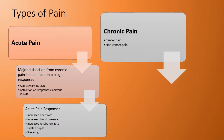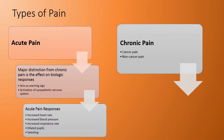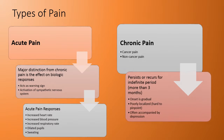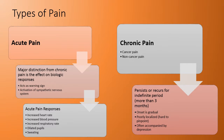Chronic pain includes cancer pain or non-cancer pain. It persists or recurs for an indefinite period, usually more than three months. Onset is gradual, it is poorly localized, and it is often accompanied by depression.